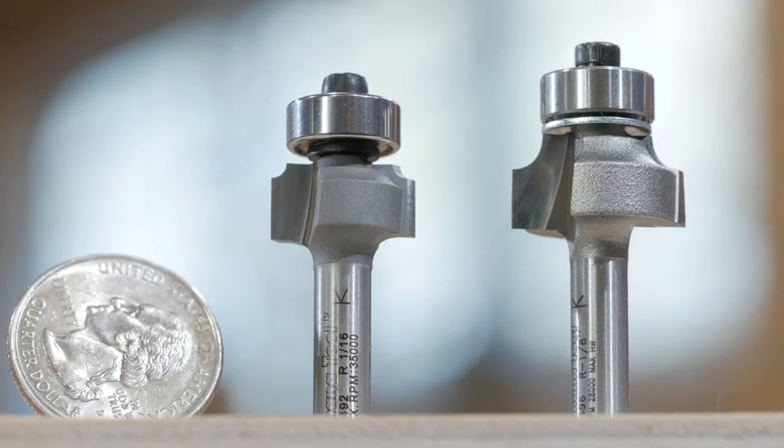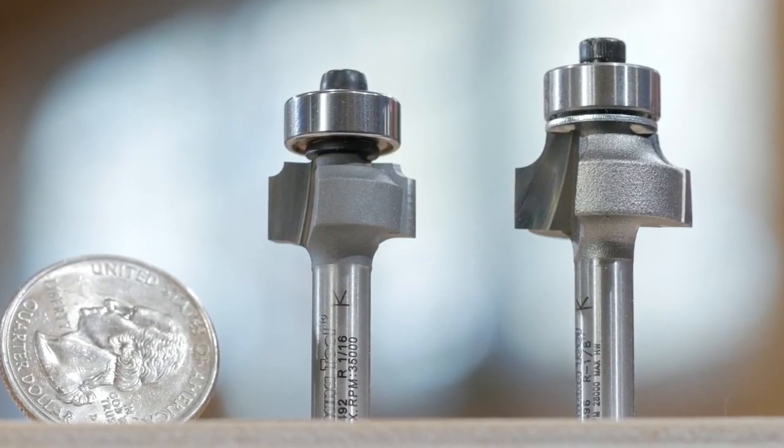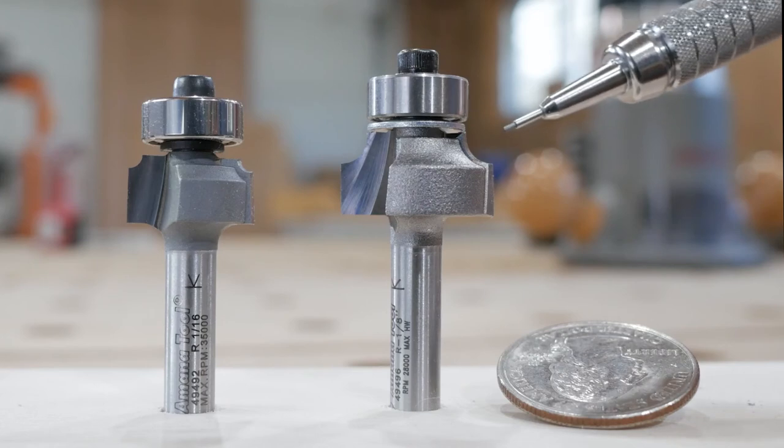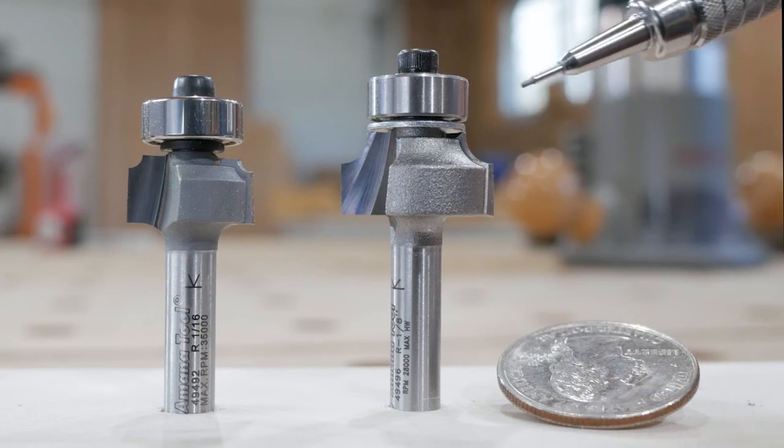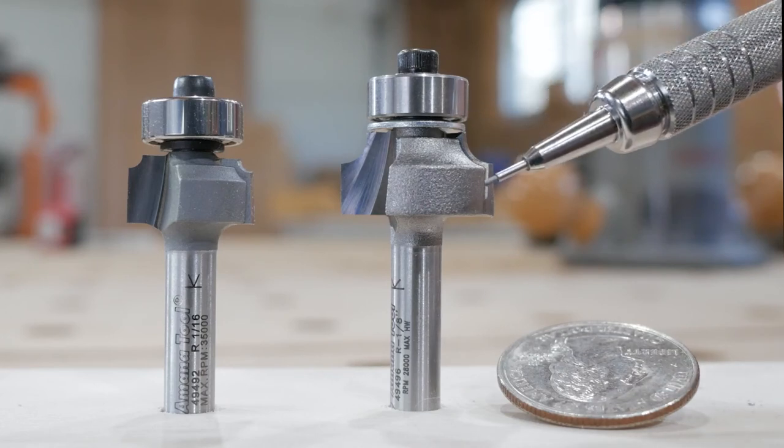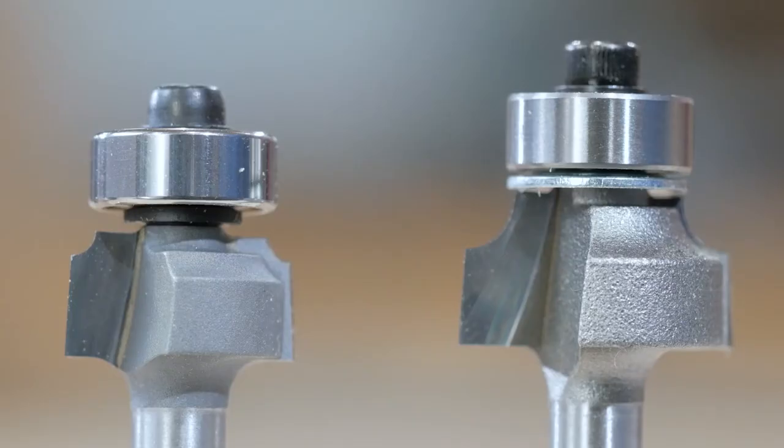These quarter inch shank bits are precision manufactured by Amana tools. They integrate thick, high-grade carbide for the cutters, which are brazed onto a solid body, along with precision, high-quality bearings for long life.